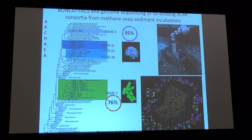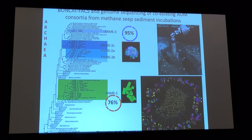Since that time, we've been focused heavily on understanding from a genomic level what makes an ANMe an ANMe and how it's distinctive from other types of methanogens. Like all single-cell platforms, we had varying levels of genome quality, but in many cases we got pretty decent genome assemblies from these methane-oxidizing consortia. Everything colored here represents good-quality genome bins assembled from this effort.